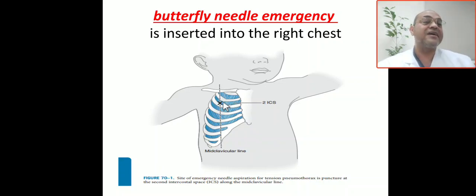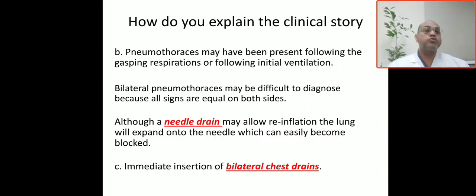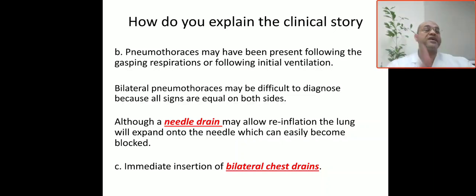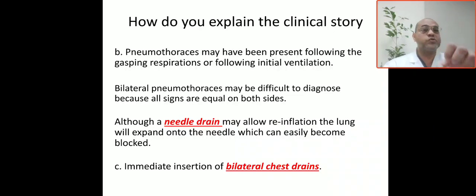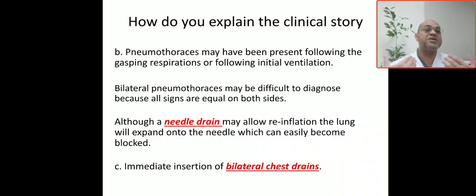To explain the clinical story: the pneumothoraces may have been present following the gasping respiration or following the initial ventilation — either due to gasping respiration or positive pressure ventilation. Bilateral pneumothorax is difficult to diagnose because all signs are equal on both sides.